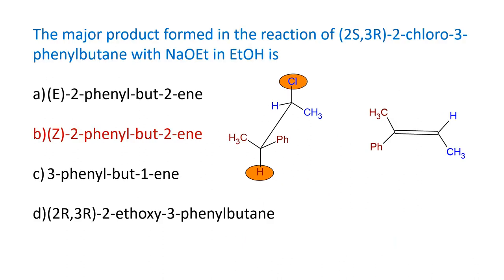Now let us go back to the question. The major product formed from this alkyl halide with sodium ethoxide in ethanol is determined by E2 mechanism — a strong base, optically active starting material with two stereocenters. Writing the structure with leaving group and abstracted hydrogen anti-coplanar leads to E2 elimination and formation of Z-2-phenyl-but-2-ene. This is an example of a stereoselective E2 reaction.